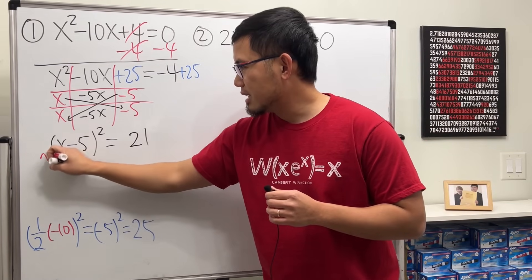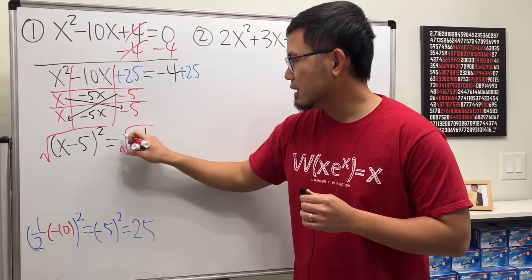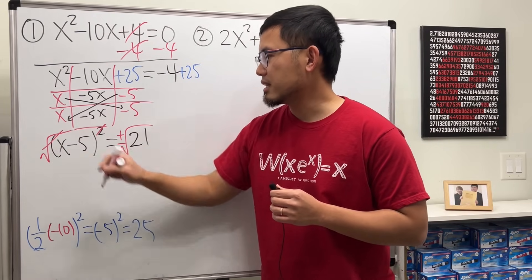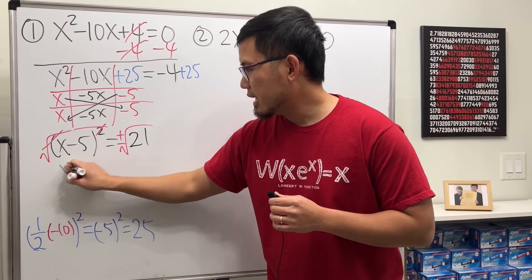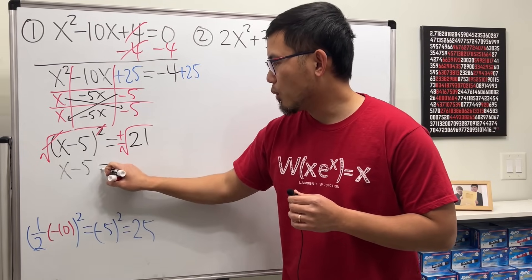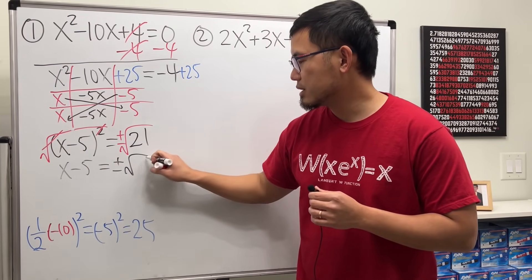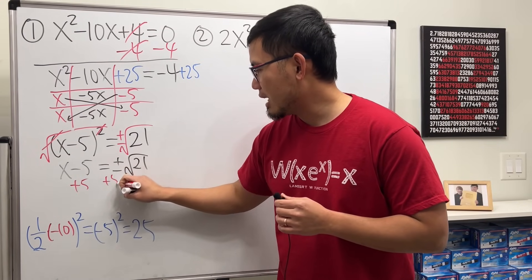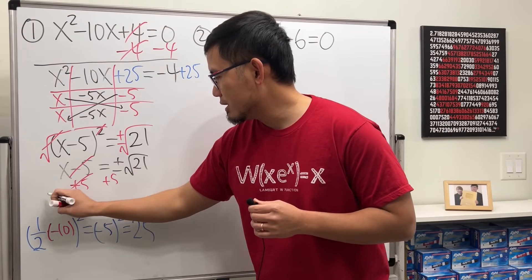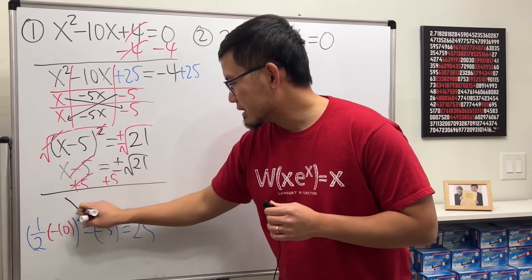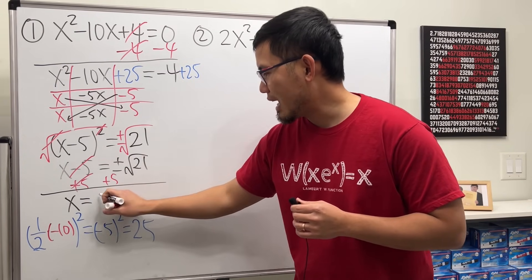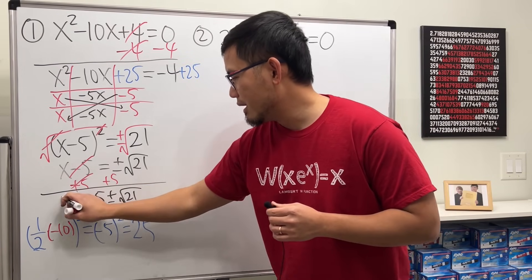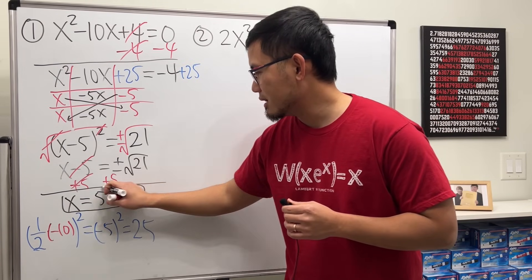Okay, to proceed, let's take the square root on both sides. And don't forget the plus or minus. On the left-hand side, this and that can cancel. So we get x minus 5 equals plus or minus square root of 21. And finally, just add the 5 on both sides. Cancel this. And we get x equals 5 plus or minus square root of 21. And we are done with that.